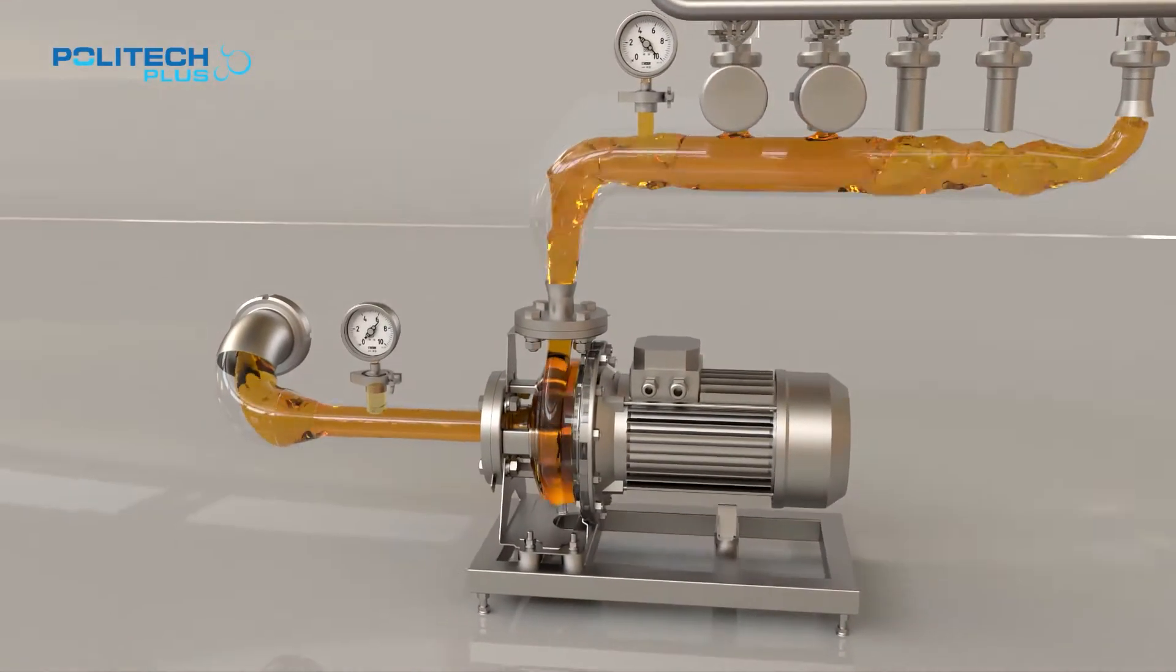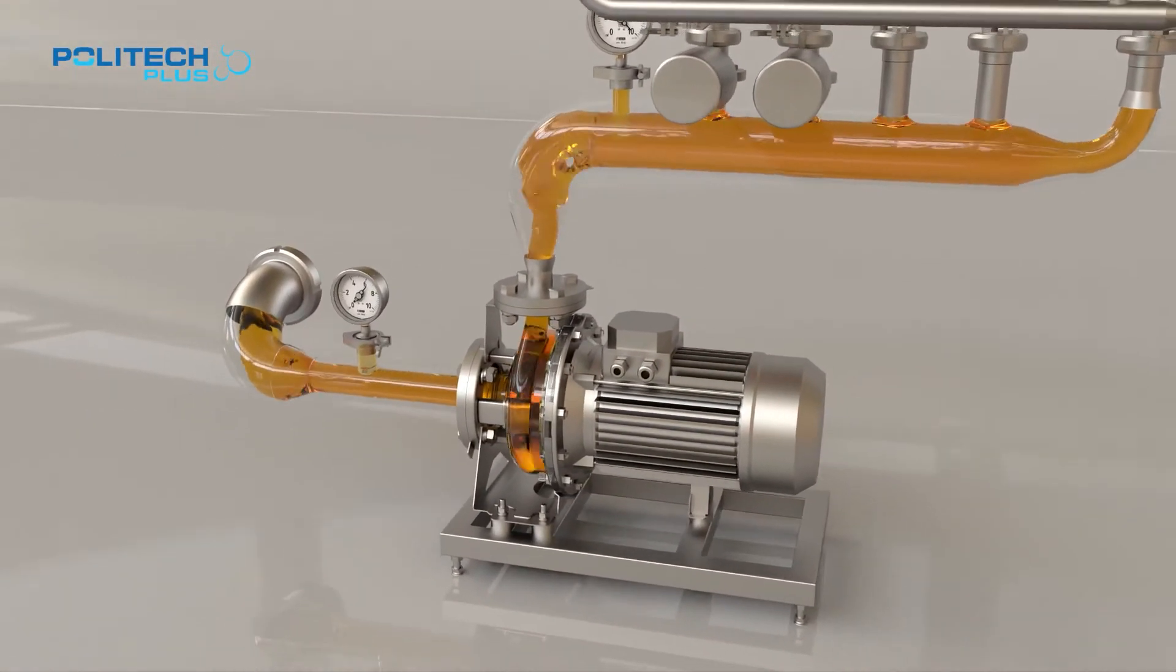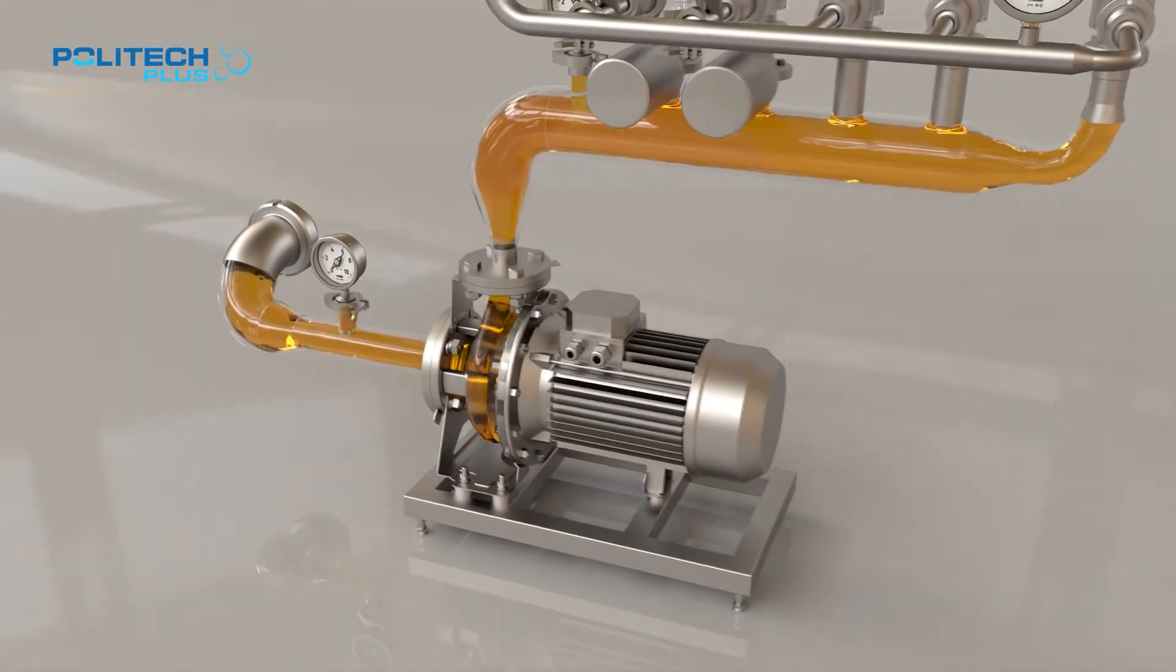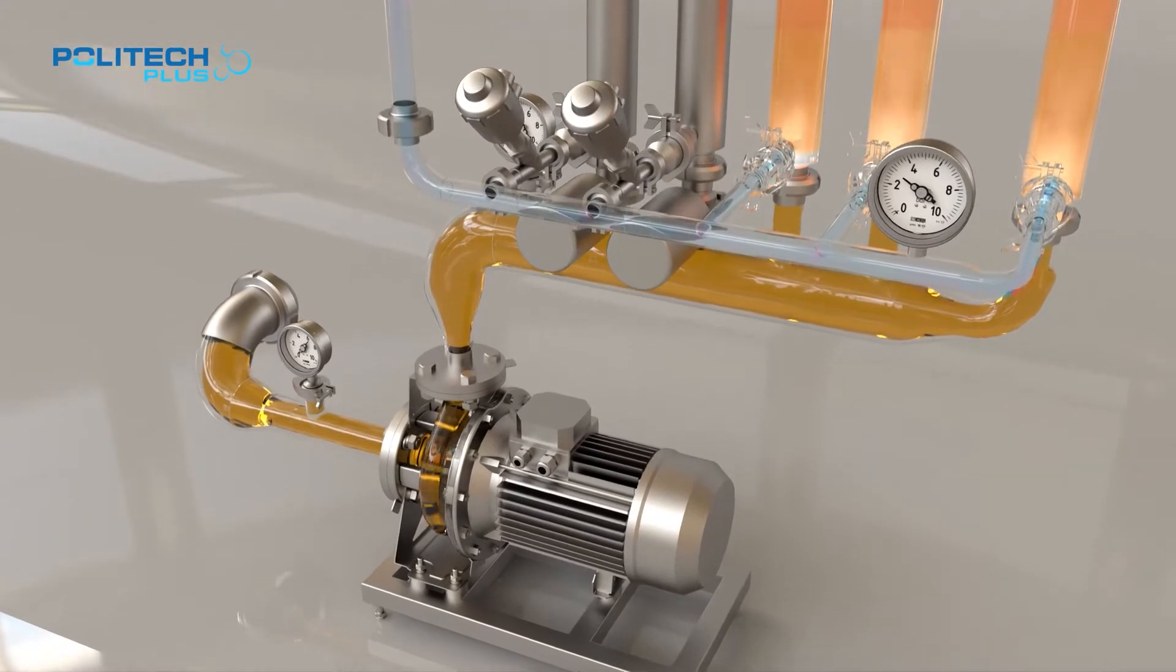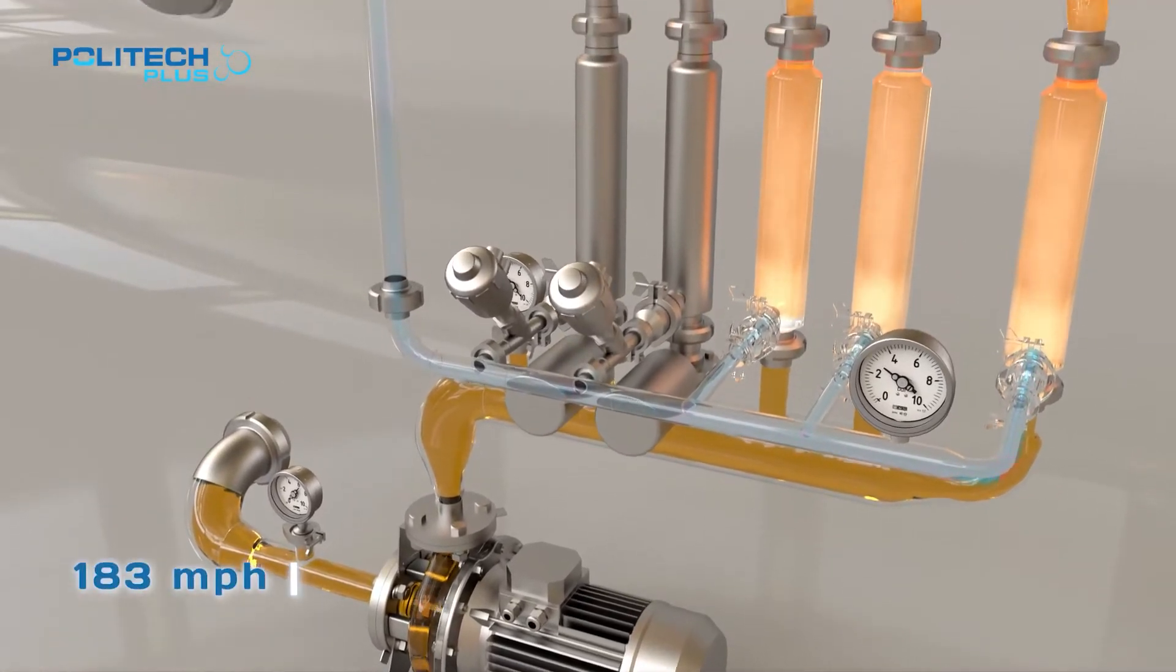Carbonation pressure is monitored by pressure gauges. The liquid accelerates to 183 miles per hour in the patented subcarb device and turns into a state of wet saturated steam vapor, that is a gaseous state.